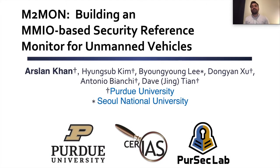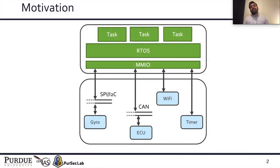Hi, my name is Arsalan Khan and today I'm going to present M2Mon: building an MMIO-based security reference monitor for unmanned vehicles. A typical unmanned vehicle has a main microcontroller that is interfaced with multiple devices. These devices could be interfaced directly through MMIO, or they could be sitting behind an external bus such as SPI, I2C, or CAN, which in turn is interfaced through MMIO.